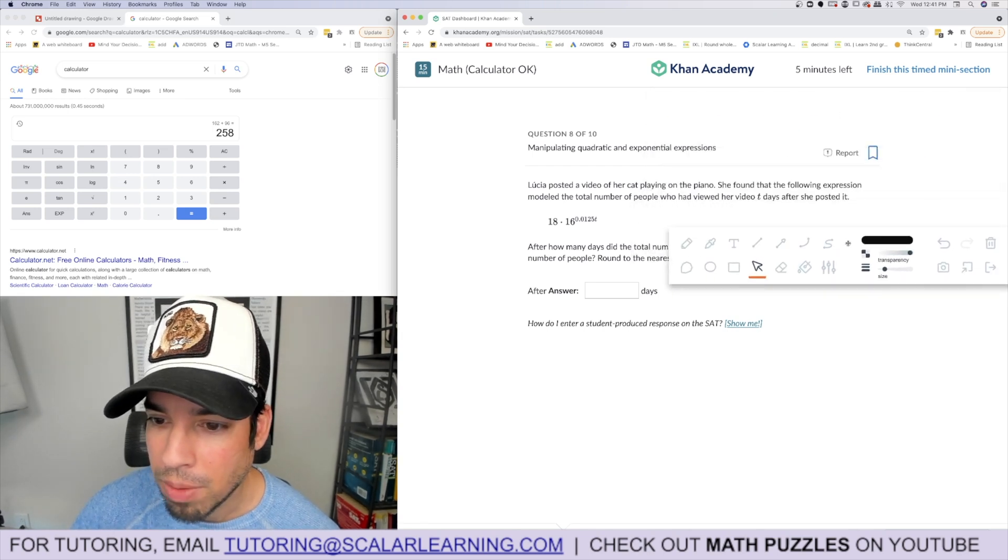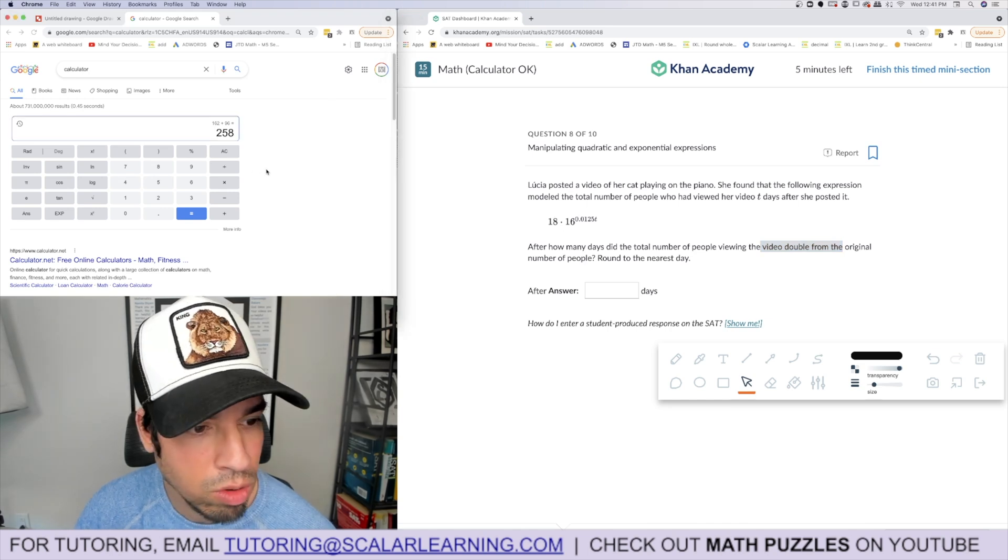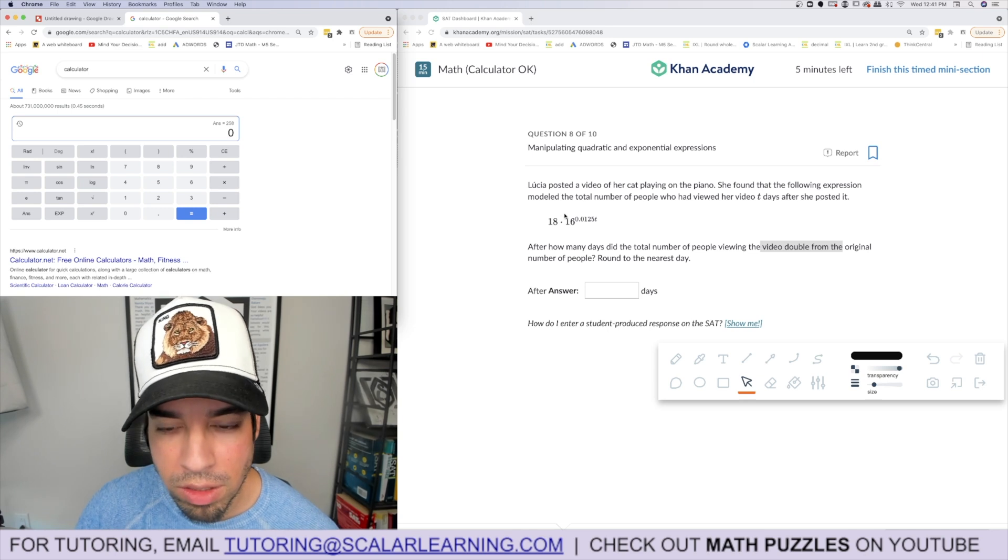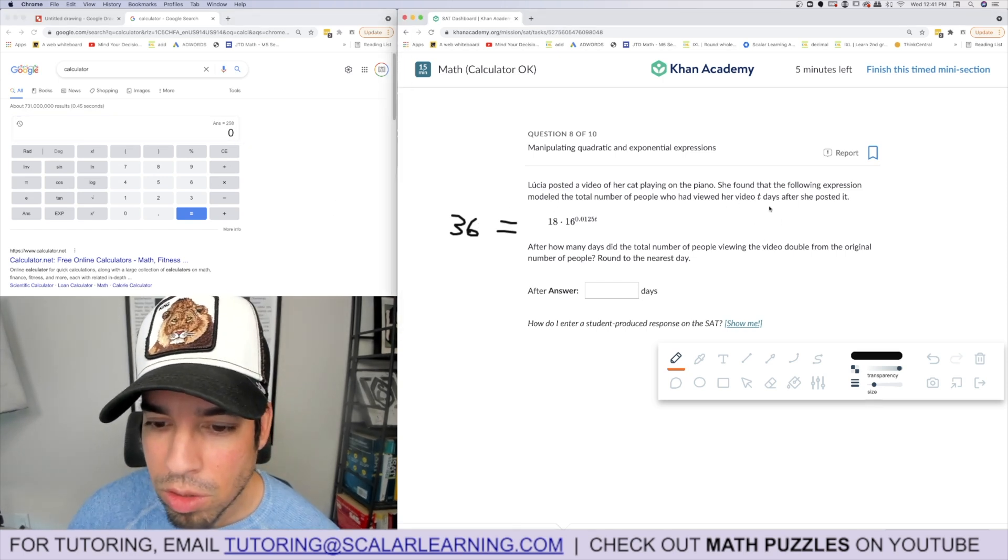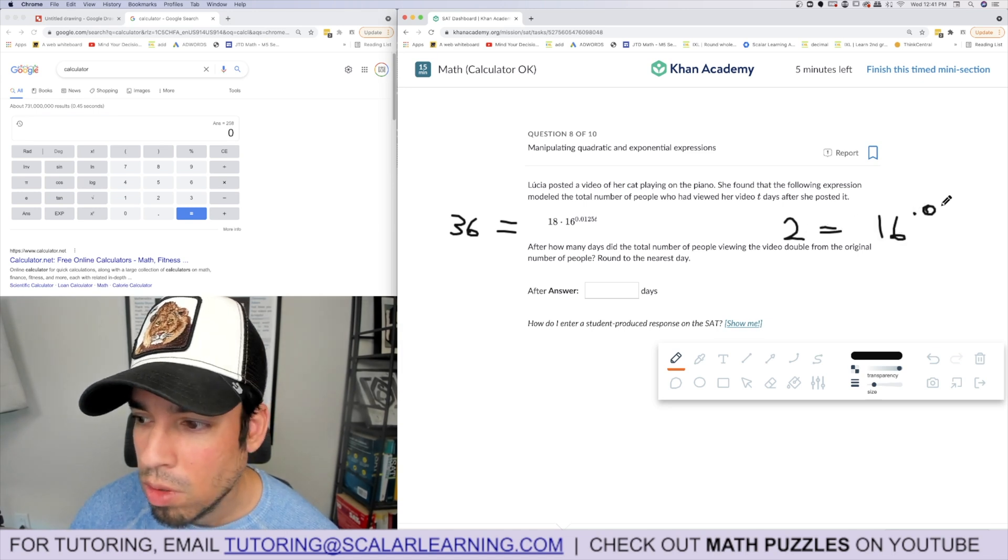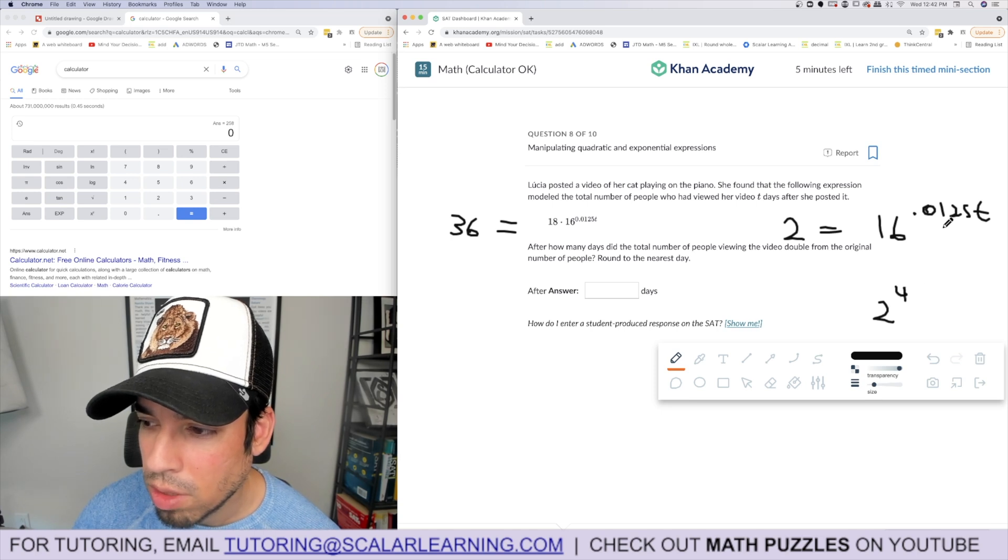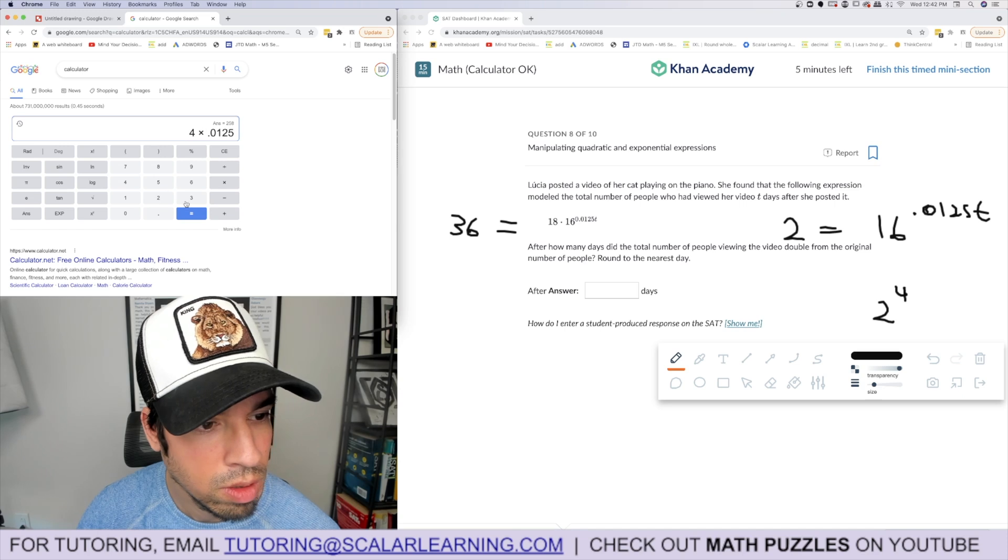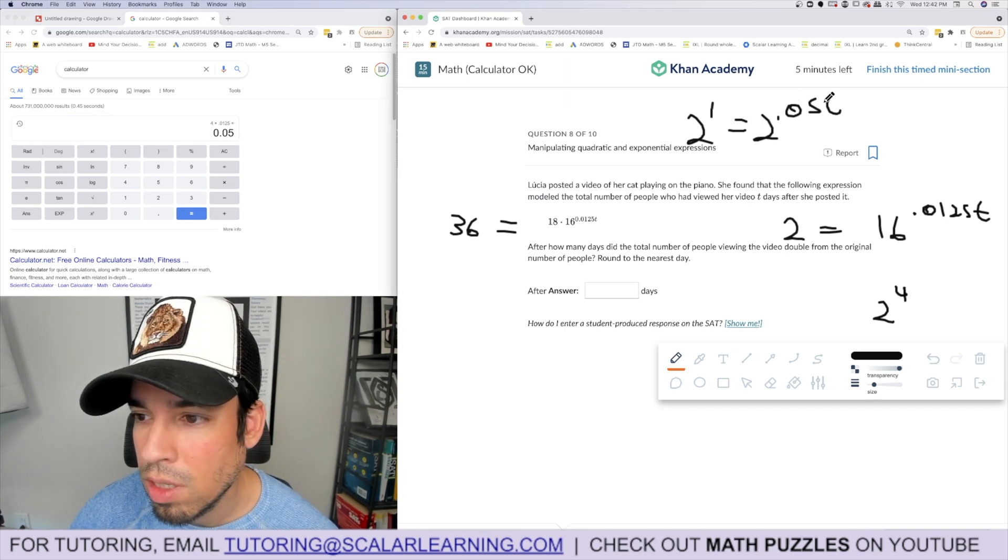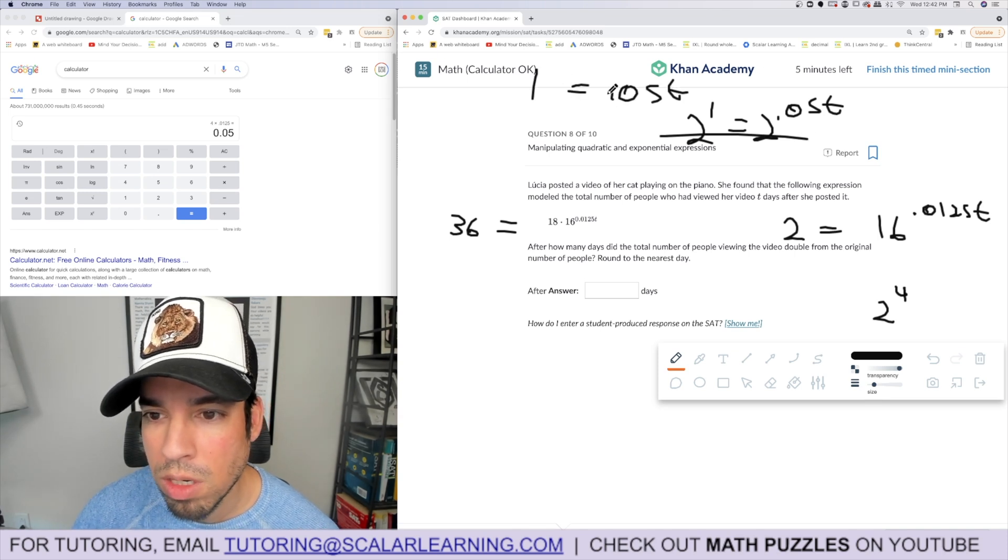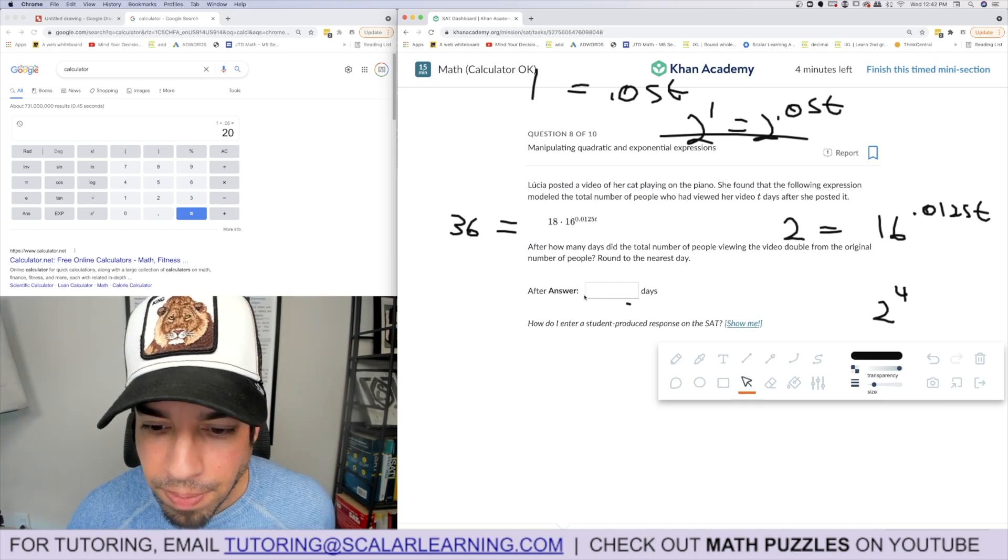Lewis posted a video. After how many days did the total number of people viewing the video double from the original number? The original is 18, we want to know when this is 36. So 36 equals 18 times 2 to the 0.0125t. Divide by 18, it's 2 equals 2 to the 0.0125t. I can make that 2 to the 1 equals 2 to the 0.05t, so 0.05t equals 1. Then 1 divided by 0.05 is 20. 20 days.